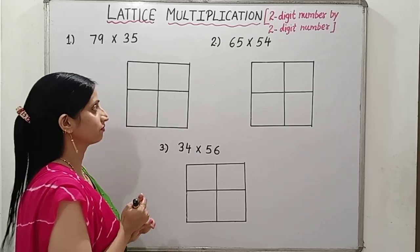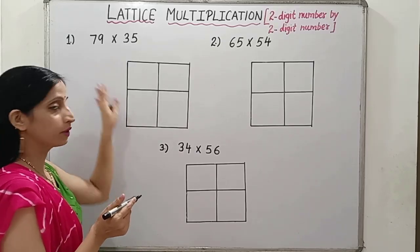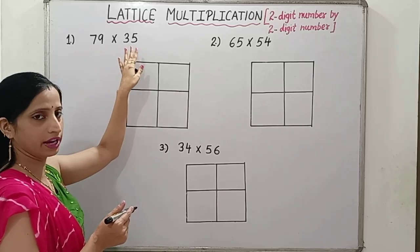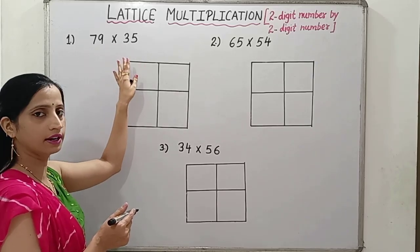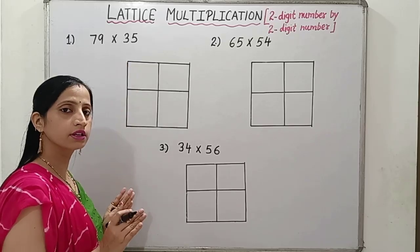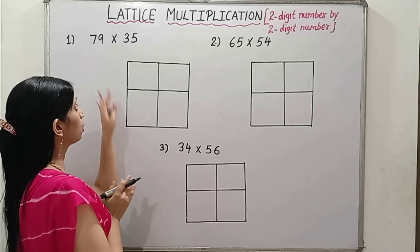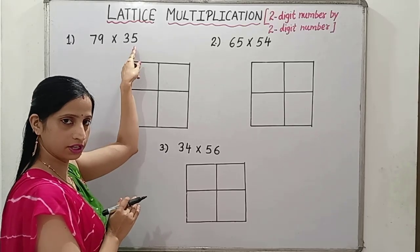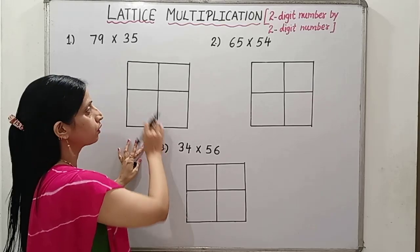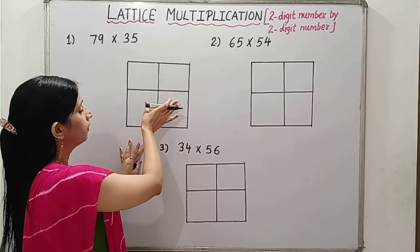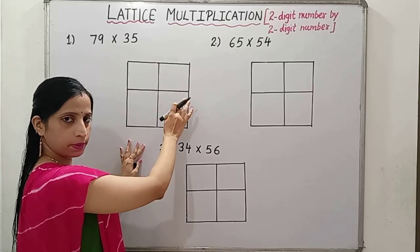In this video we will learn how to multiply a given 2-digit number by 2-digit number. As a few questions are given, question number 1 is 79 times 35. For this, first we need to draw a square as it is a 2-digit by 2-digit multiplication. We will draw 2 rows and 2 columns. We will divide this square in 4 equal parts.